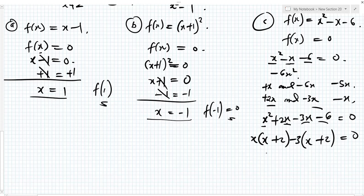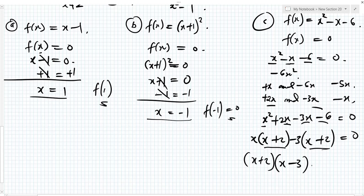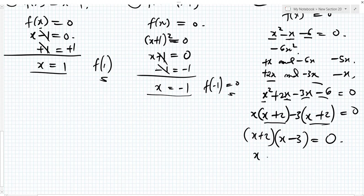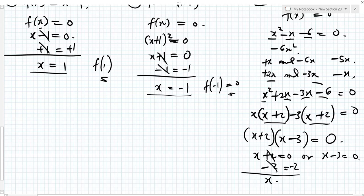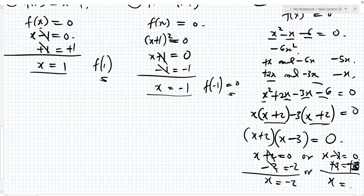Looking at the result, you see that x plus 2 is a common factor. Factoring it out: x plus 2, multiplied by x minus 3, equals 0. That means x plus 2 is equal to 0 or x minus 3 is equal to 0. For the first: adding minus 2 to both sides gives x equal to minus 2. For the second: adding plus 3 to both sides gives x equal to 3.